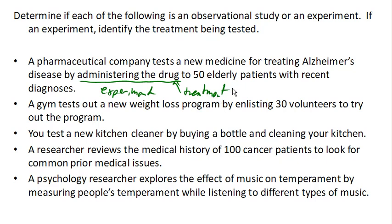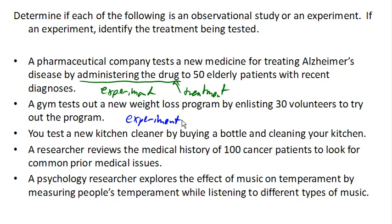Suppose a gym tests out a new weight loss program by enlisting 30 volunteers to try out the program. This is, again, an experiment because we are subjecting people to a treatment. In this case, the treatment is the program that these volunteers are going to try out.